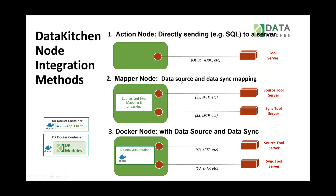There's a mapper node type where you get data from somewhere — S3, SFTP, even JDBC — bring it into the process space of a Docker node, do source and sync mapping, simple unpacking and zipping, then push it back. This is useful when you want to get something from an SFTP server, do some checks on it, and push it to an S3 bucket. You can also do a mapper node as a Docker node — pull data, load it into any Docker container, do Python processing, or load it into an ETL tool or a Jupyter notebook.